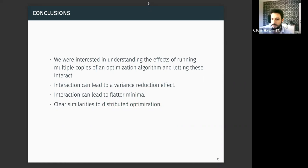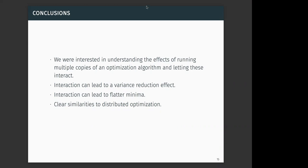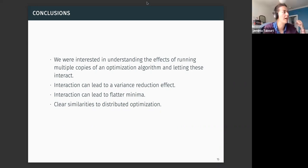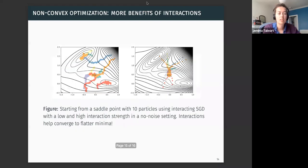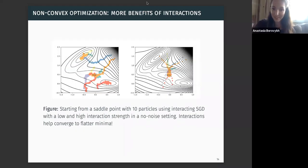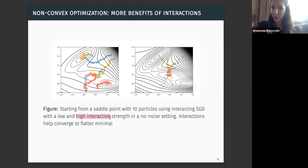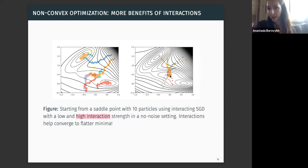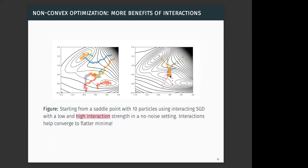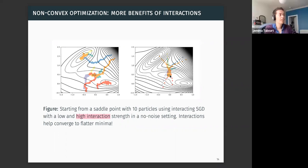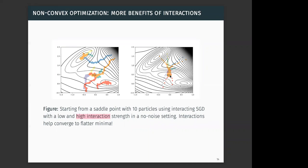There is one question from Nancy Nichols: in the last example, what happens in the noisy situation? In a noisy situation, we have to consider the interaction strength to be even higher, because we additionally have to mitigate the noise that the different particles are observing. You could obtain similar convergence, but you would have to pay more attention to how you define the interaction and ensure a sufficiently strong interaction strength.